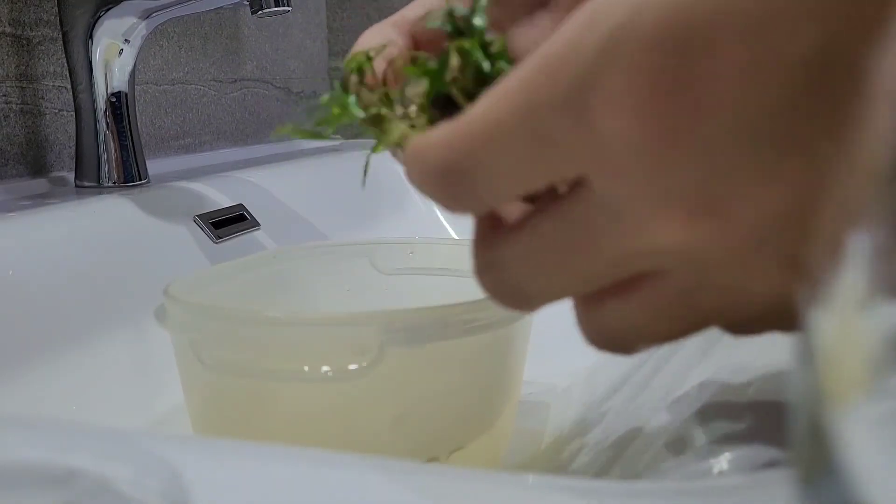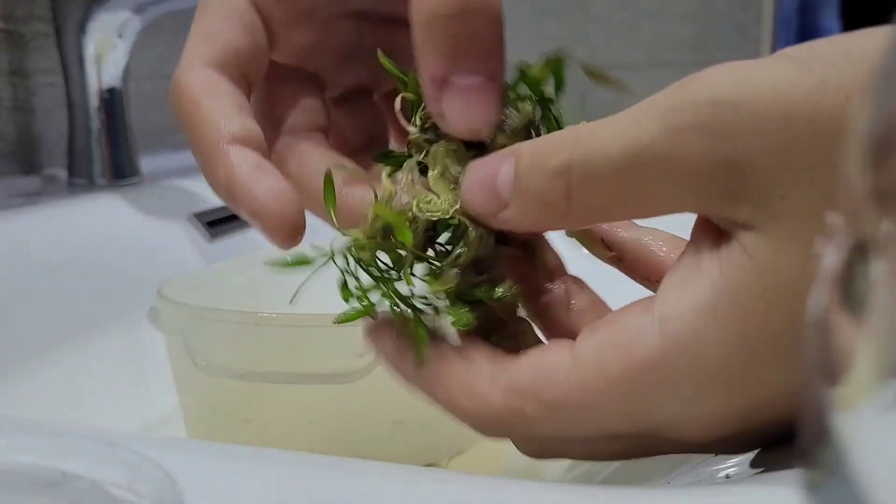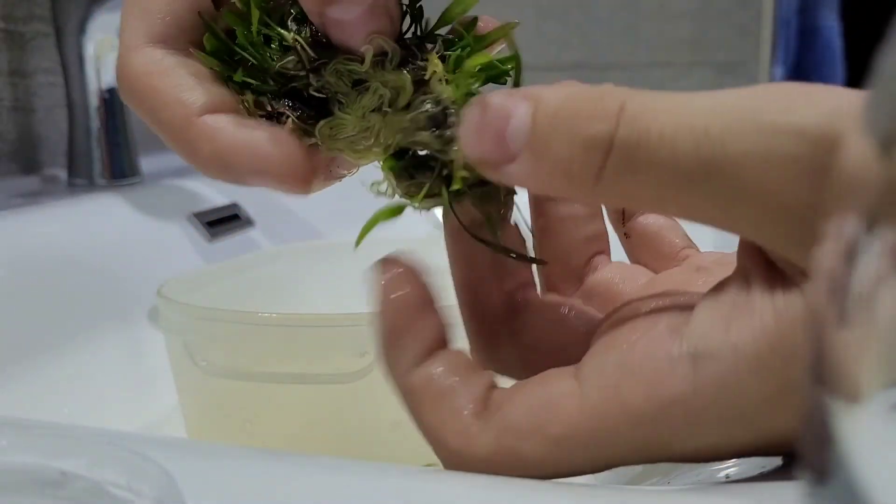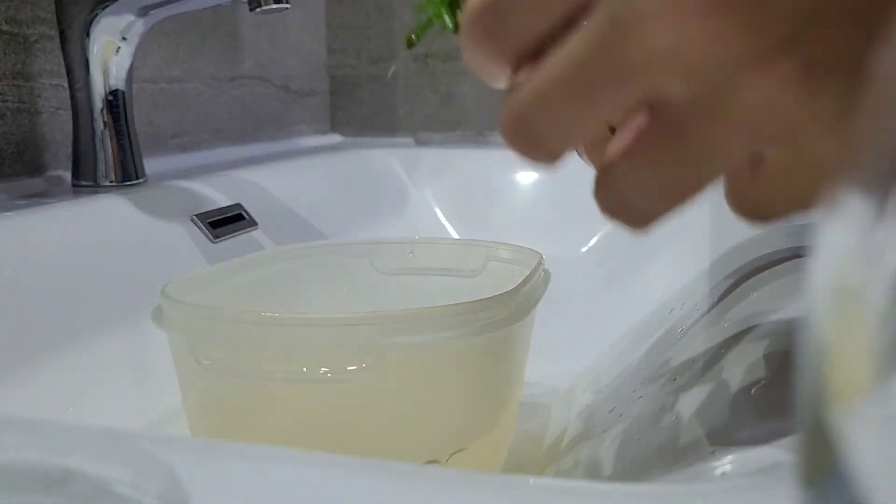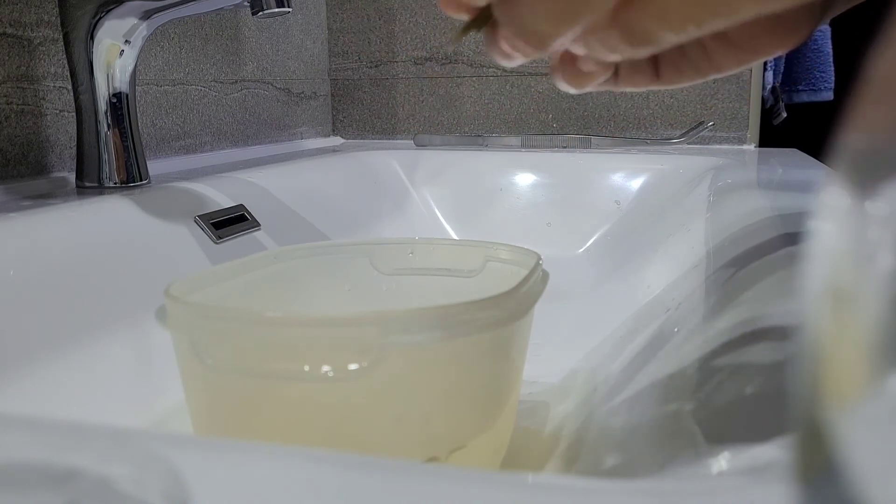Once you think that you've gotten rid of all of the gel, if your plants are attached like this by the roots, then you can cut them up and plant them. So thank you for watching until the end.